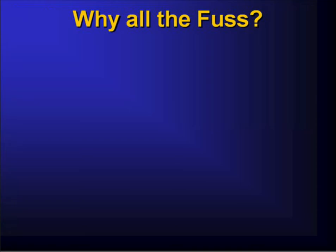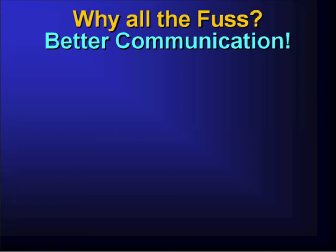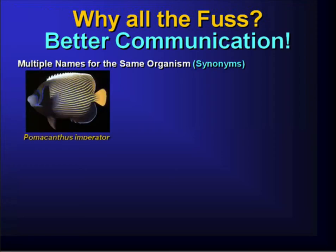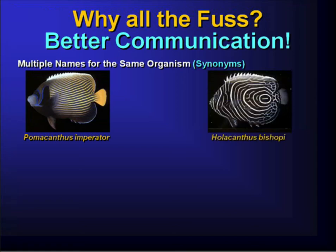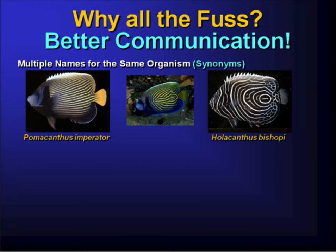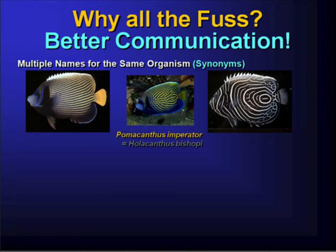So why all the fuss? It boils down to better communication — avoiding miscommunication in two forms. One form is when we have multiple names for the same organism, which we call synonyms. It's perfectly reasonable that a species that looks different would receive different names, but sometimes — as with scuba diving revealing a fish's juvenile form — they turn out to be the same species. When that happens, we need rules to decide which name to use; under the Code of Zoological Nomenclature, one becomes the primary name and the other — such as Holocanthus bishopii — becomes a synonym.